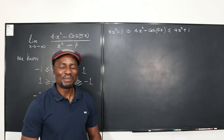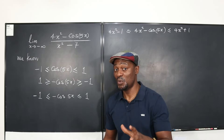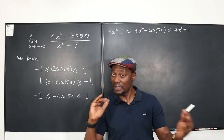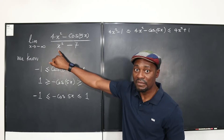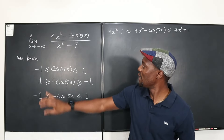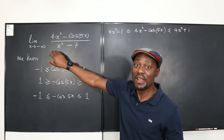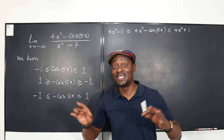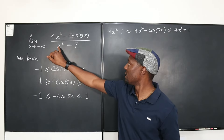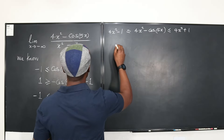Something is still missing — we need to divide everything by x² minus 7. You have to be careful here: when you multiply or divide by a negative value you flip the signs. However, we know x² minus 7 will be positive because as x goes to infinity, x² becomes very large compared to 7, making 7 insignificant. So we can divide through without flipping the signs. Dividing by x² minus 7 throughout gives us the structure we need.